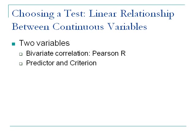The predictor is the variable you're predicting with; the criterion is the outcome you're trying to predict. For example, is alcohol use correlated with number of falls? Most would say alcohol use is the predictor and number of falls is the criterion. But this is fairly subjective — if you want to figure out how drunk people are by how much they're falling down, now falls becomes the predictor and alcohol use is the criterion. For your study, you will identify which one you see as the predictor and which as the criterion.